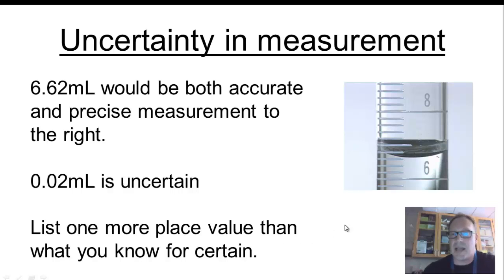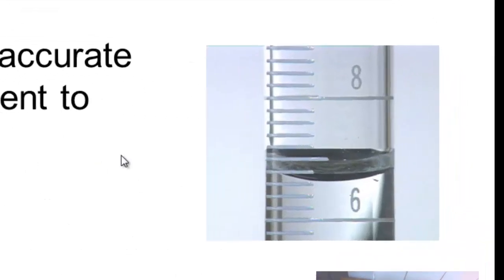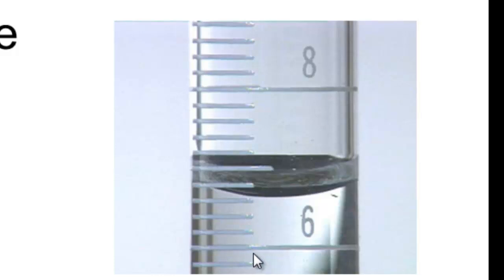Now, when I look at this picture here again, 6.62 milliliters would be both an accurate and a precise measurement to the right here on this picture. So let's look at this. If this line right here is 6 and that line right there is 7, and all of these marks show a gradual difference between those measurements, you've got to do some math here. There are 4 marks in between this 7 line and this 6 line.